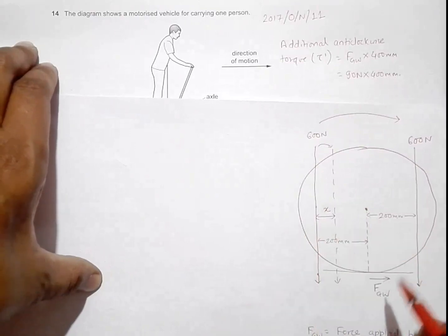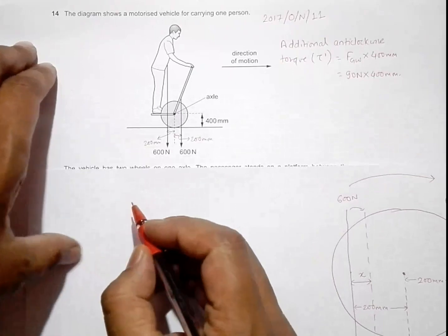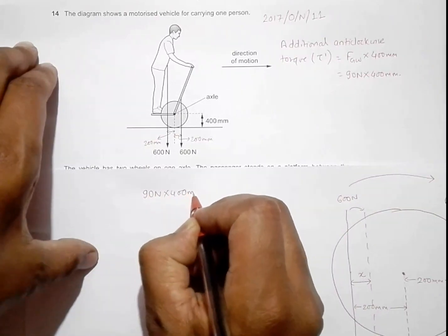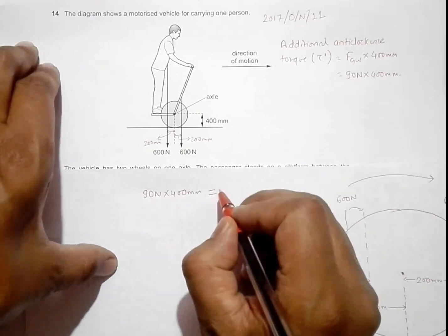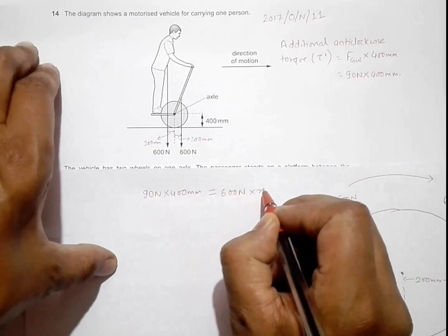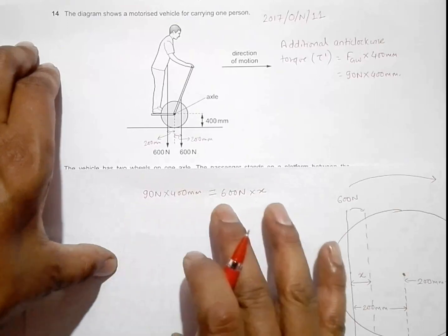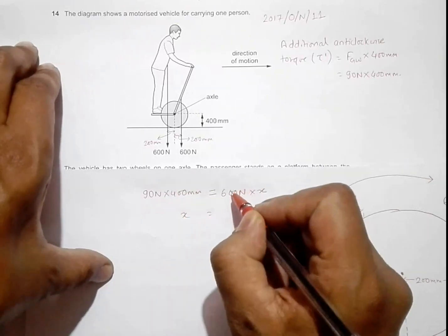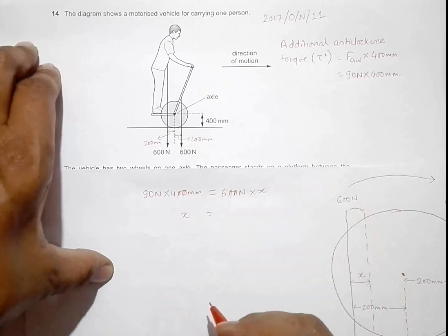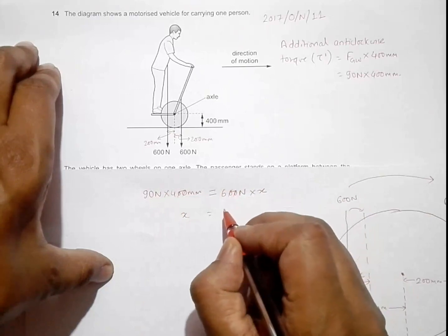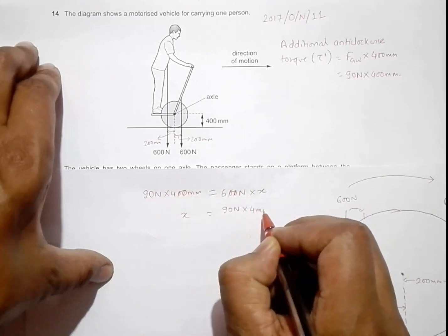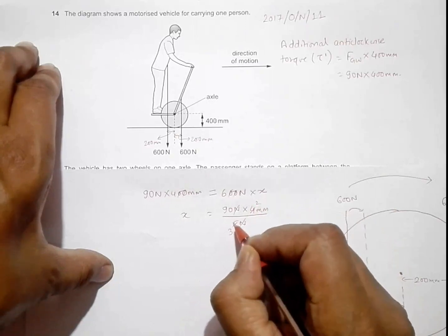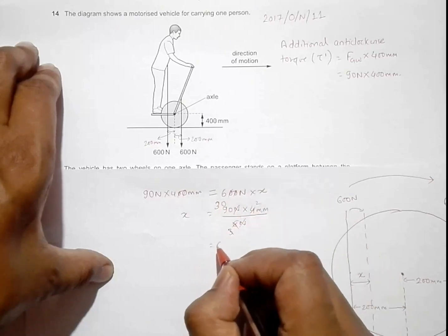The additional torque is 90 Newton × 400 millimeter. The person must reduce their torque by this same amount. So: 600 Newton × x = 90 Newton × 400 millimeter. Solving for x: x = (90 × 400) / 600, which simplifies to 90 × 4 / 60, giving x = 60.